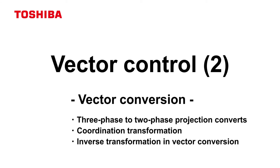In this chapter, we describe the phase conversion, coordination transformation, and inverse transformation in vector conversion.